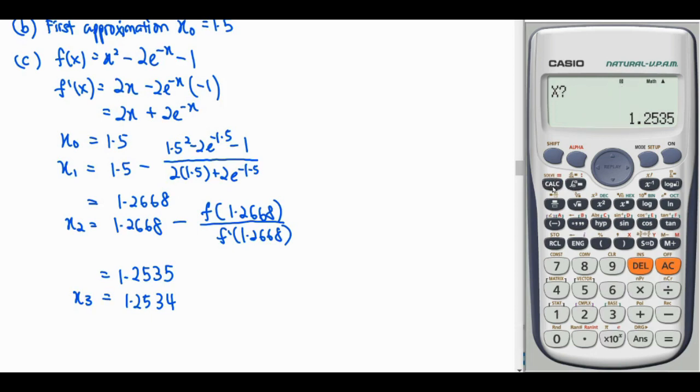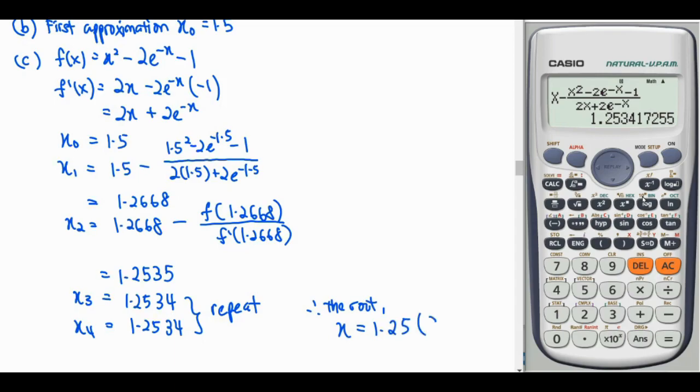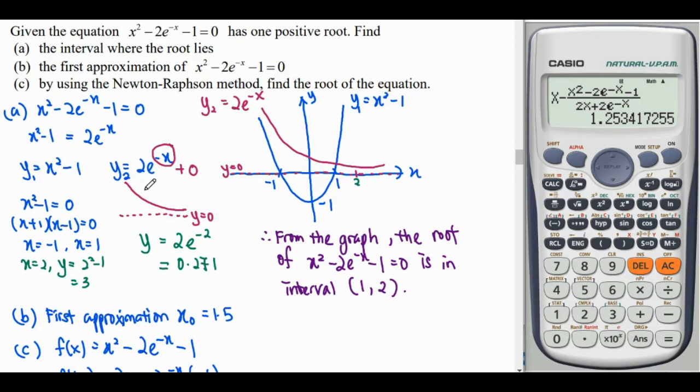So one more time. Then you can notice that our approximation is repeated. So from here, we can stop our calculation and answer the question. The root x will be equal to 1.254 to 3 significant figures. So back to question A,